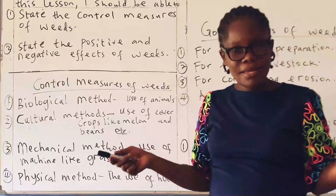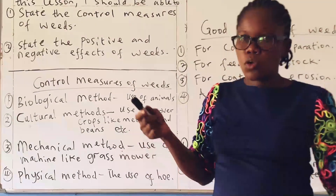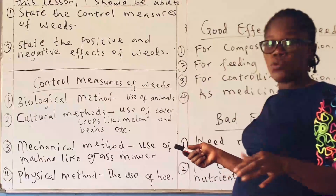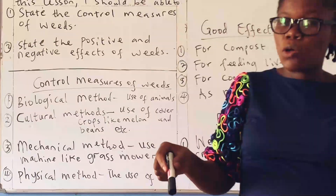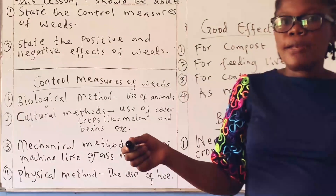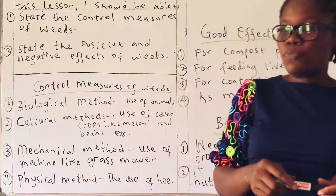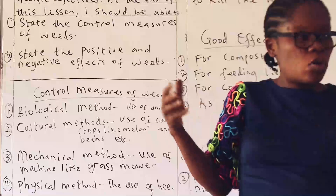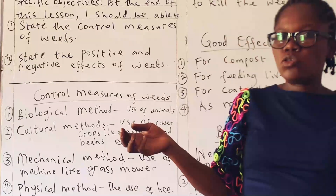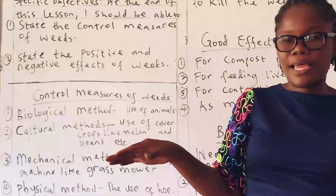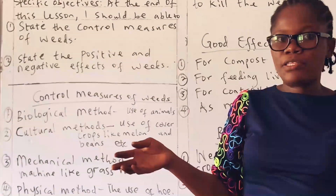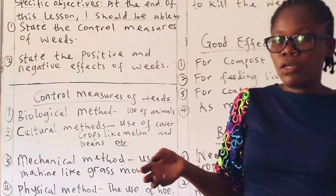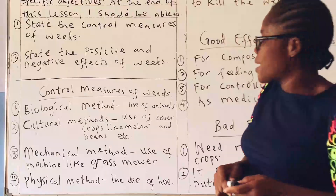The biological method simply involves the use of animals to eat up the weeds. Example, the ruminant animals — the goats, the sheep, and the cattle. So if we introduce animals into the farm in order to eat up the weeds, remember before you introduce animals into your farm it should be the kind of crops that the animal cannot reach, like the oil palm plant, the cocoa plant, and so on. You do not introduce animals into the farm where they can eat up crops like cassava. You introduce them into tree crops like your oil palm.